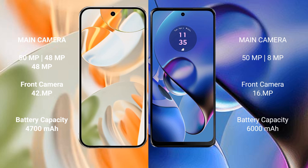The Google Pixel 9 Pro features a triple rear camera setup with 50MP, 48MP, and 48MP lenses, and a 42MP front camera. The Motorola Moto G64 features a dual rear camera setup with 50MP and 8MP lenses, and a 16MP front camera.